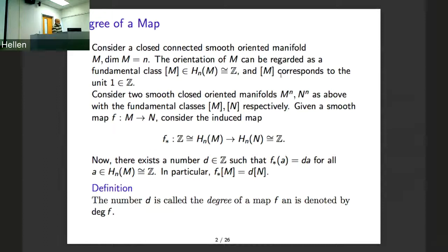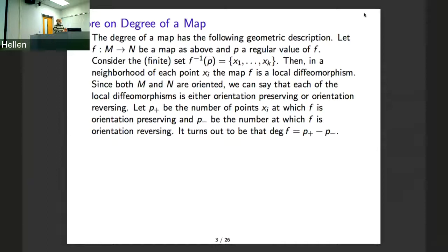Now consider two such manifolds with their two fundamental classes. Then, given a map F from M to N, we have the induced map in homology from H_n(M) to H_n(N), which is a map from Z to Z. For every such map you have a number D such that this map is multiplication by D. This D is called the degree of F.